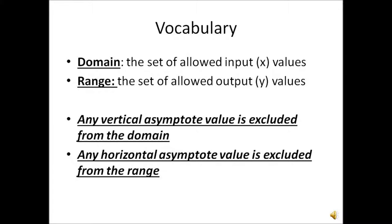And finally, domain and range. Recall that the domain is the set of allowed input or x values, and the range is the set of allowed output or y values. If something is a vertical asymptote value, it is automatically excluded from the domain. If something is a horizontal asymptote value, it is automatically excluded from the range. For example, vertical asymptote x equals 6 means x equals 6 is not part of the domain. If you have a horizontal asymptote y equals 2, that value is not going to be part of the range.